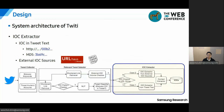The last part is the IOC extractor. After selecting the relevant tweets, there are two cases Twitty needs to consider. In the first case, Twitty can find IOCs directly in the tweet text. In the other case, Twitty visits external data sources via extracted URL links and extracts IOCs from their sites. Examples of external data sources include URLhaus and Pastebin.